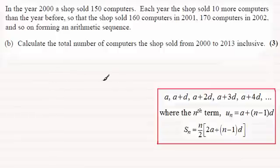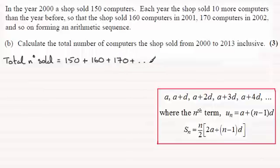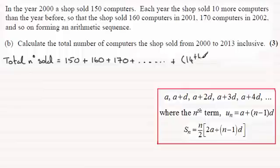So we know the first term was 150, we know the common difference was 10, we just need to know how many terms there were. The total number sold is going to be 150 for the first year in 2000, plus 160, 170, and so on all the way up to the year 2013. But this is not the 13th year — remember 2000 was the first year, 2001 was the second year, so 2013 is the 14th year. So we've got 14 terms here.